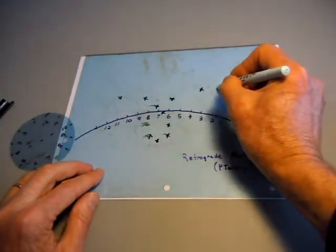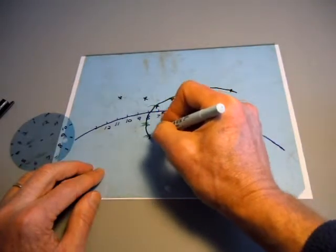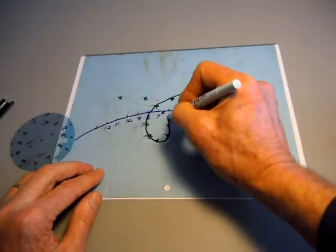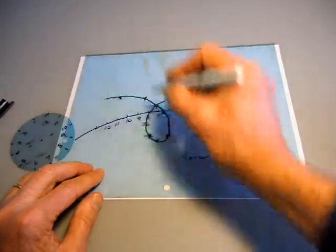So the apparent motion of the star as it goes around the small circle, and the small circle travels around the big circle, looks like this, and we get the retrograde motion. That's it.